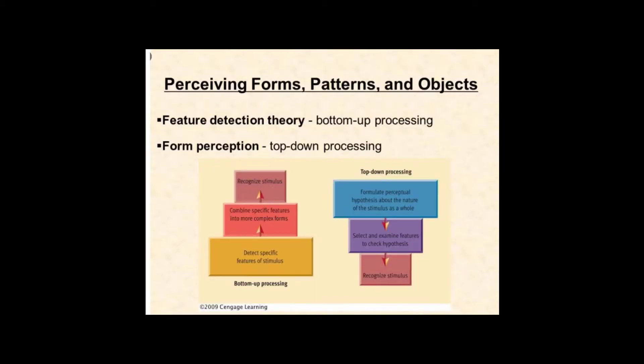According to feature detection theory, people detect specific elements in stimulus and build them up into recognizable forms, which is called bottom-up processing.